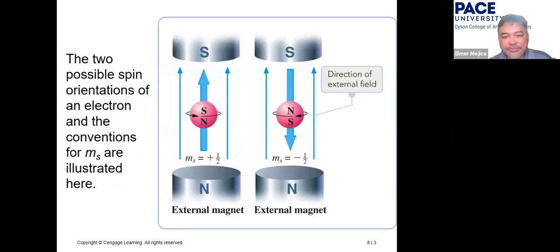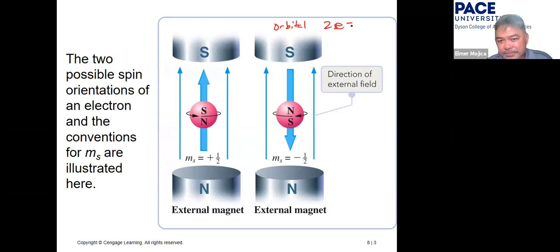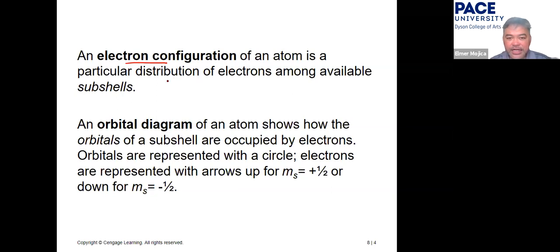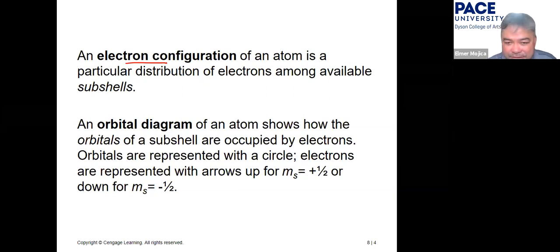From this orbital diagram we can arrange into the so-called electron configuration, which is the particular distribution of electrons among available subshells — or how orbitals are filled up when you have available electrons.